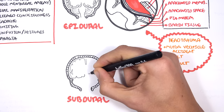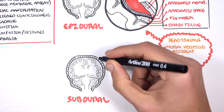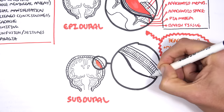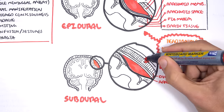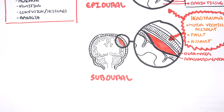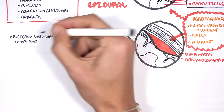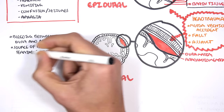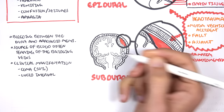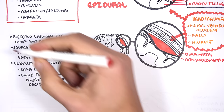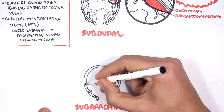The next type is subdural hemorrhage. As the name suggests, it's a hemorrhage that occurs below the dura mater — between the dura mater and the arachnoid membrane. The causes are similar and include motor vehicle accidents, falls, and assaults. The source of blood is often tearing of the bridging veins. Clinical manifestations are similar to those of epidural hemorrhage. Coma occurs in 50% of cases, usually with a lucid interval that leads to progressive neurological decline and then coma.